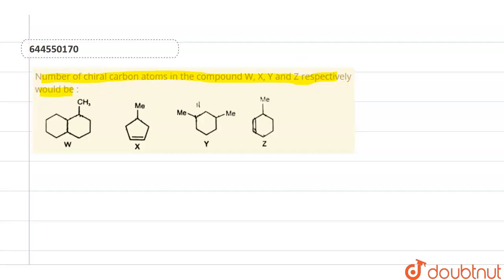So first compound, let us check the number of chiral carbon atoms. For W, the structure is given like this, 1, 2, 3, CH3. If we look at here, we have a chiral carbon atom here because it is attached to CH3, a cyclohexane ring, a CH2 group, and a proton H. Hence this has a chiral carbon atom.